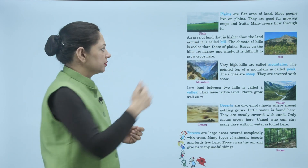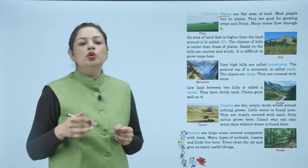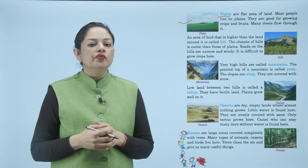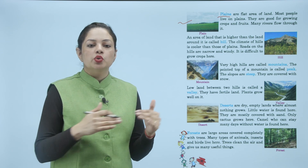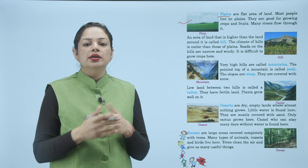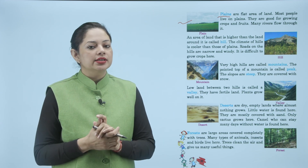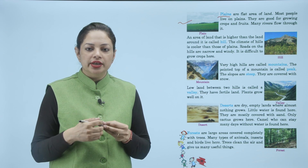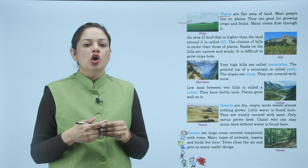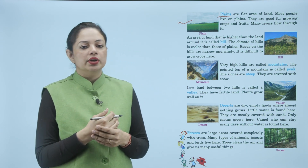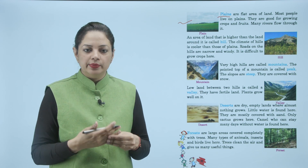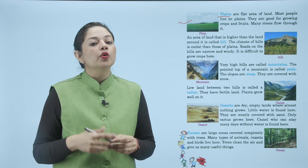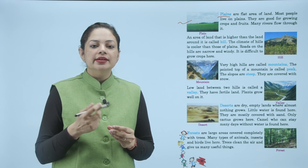Next is plains. Plains are flat areas of land. Most people live on plains — they are good for growing crops and fruits, and many rivers flow through them. Plain क्या होता है — land का वो part जो बिल्कुल flat होता है, उसको plains बोलते हैं। यहाँ life बहुत easy होती है, crop और fruit grow हो सकते हैं, और बहुत सारी rivers भी plain पर flow करती हैं।